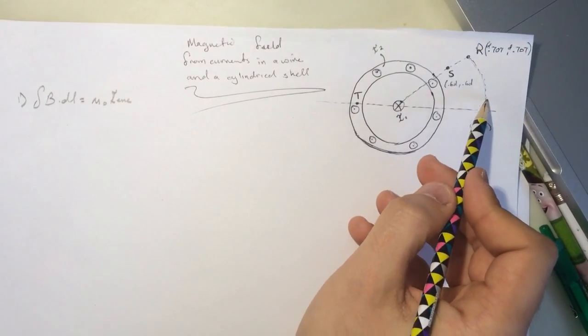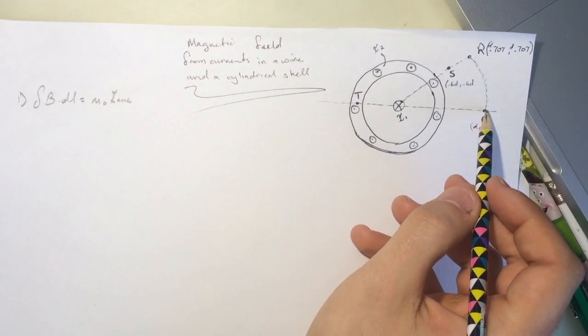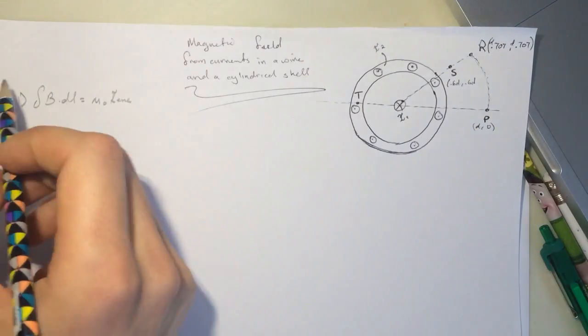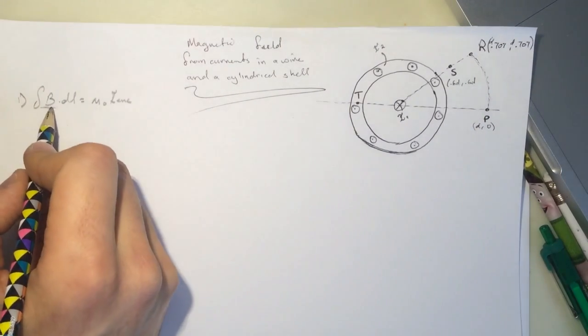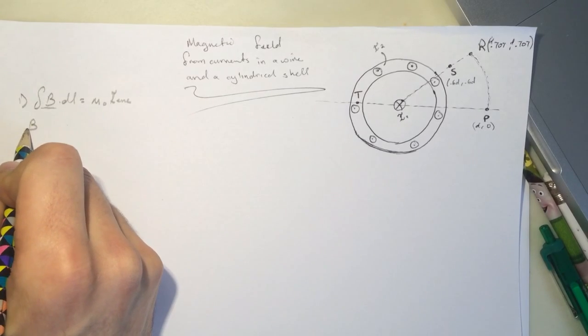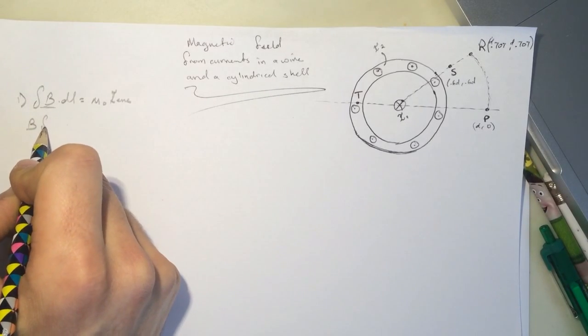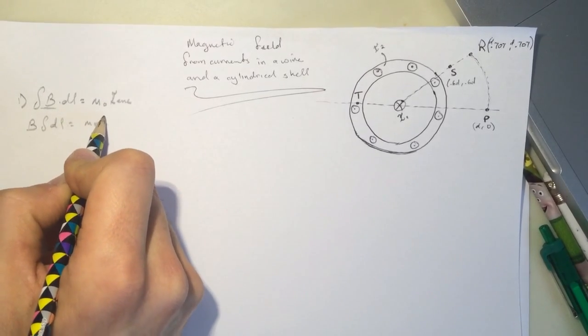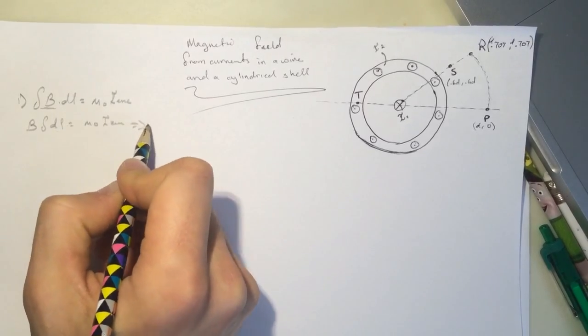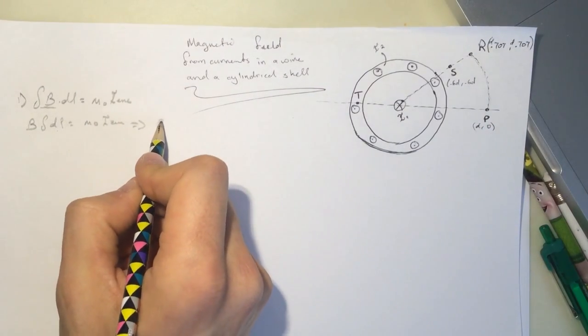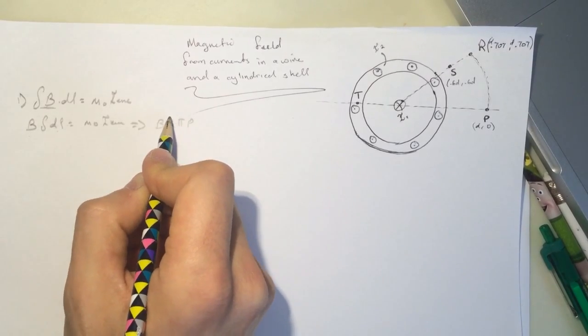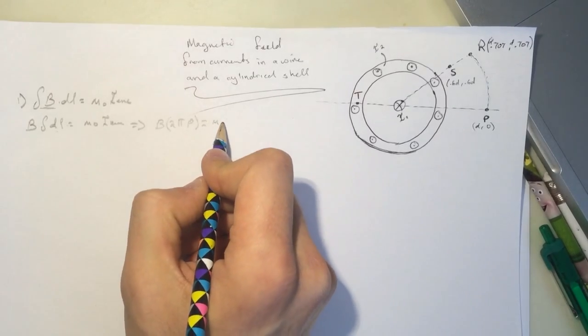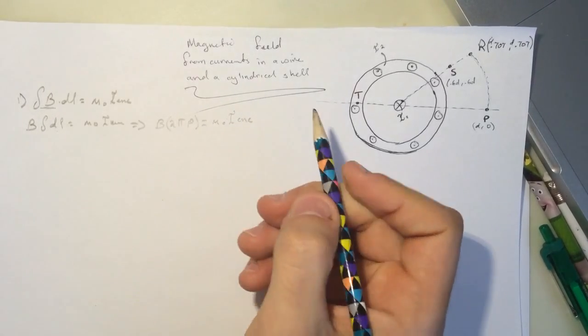So the I enclosed will be, if you look at it here, we're going to draw a circle. It's going to be the 2 pi r. So since the B is constant, it's not going to change, so we can pull it out of the integral. The integral of DL, mu naught I enclosed. So this guy will be just 2 pi P. So it equals mu naught I enclosed. What is the I enclosed?